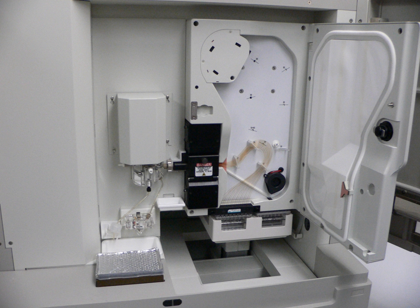Shotgun sequencing is a sequencing method designed for analysis of DNA sequences longer than 1000 base pairs, up to and including entire chromosomes. It is named by analogy with the rapidly expanding, quasi-random firing pattern of a shotgun. Since gel electrophoresis sequencing can only be used for fairly short sequences (100 to 1000 base pairs), longer DNA sequences must be broken into random small segments which are then sequenced to obtain reads. Multiple overlapping reads for the target DNA are obtained by performing several rounds of this fragmentation and sequencing. Computer programs then use the overlapping ends of different reads to assemble them into a continuous sequence. For much of its history, the technology underlying shotgun sequencing was the classical chain termination method or Sanger method, which is based on the selective incorporation of chain-terminating dideoxynucleotides by DNA polymerase during in-vitro DNA replication.